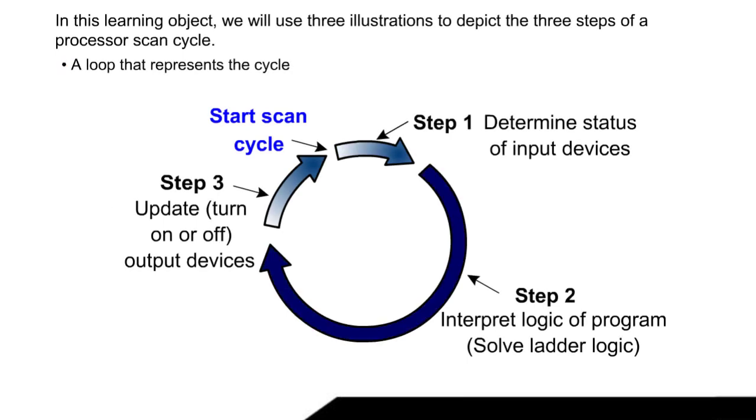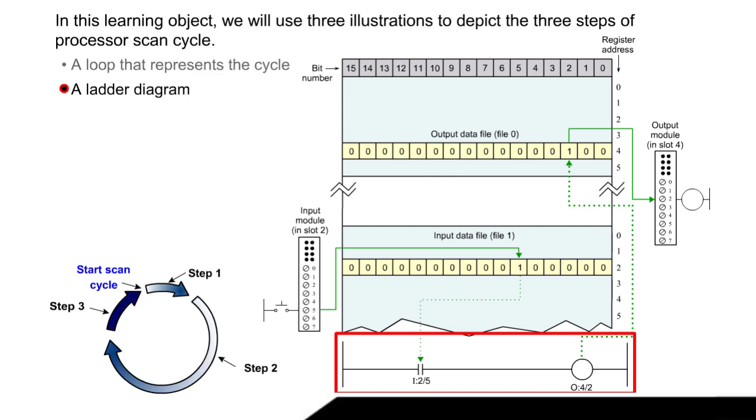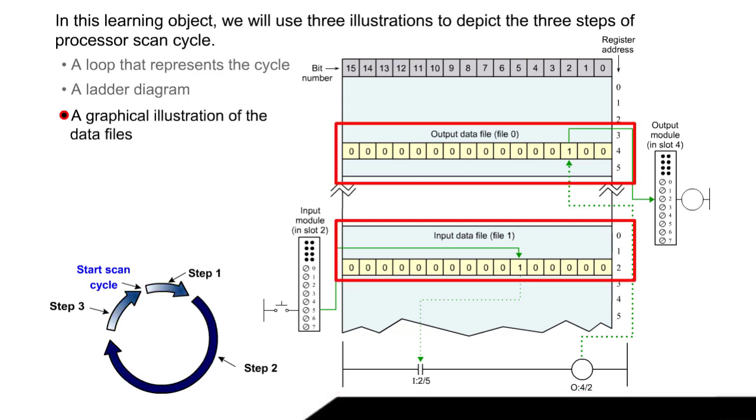In this learning object, we will use three illustrations to depict the three steps of a processor scan cycle. A loop that represents the cycle, a ladder diagram, and a graphical illustration of the data files.